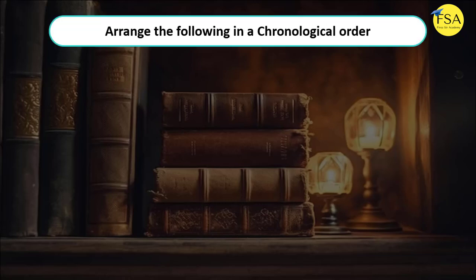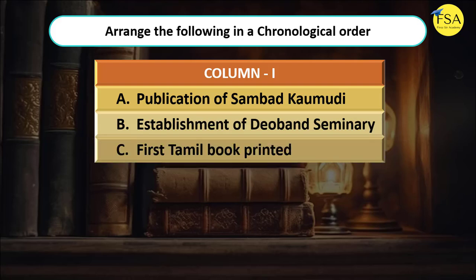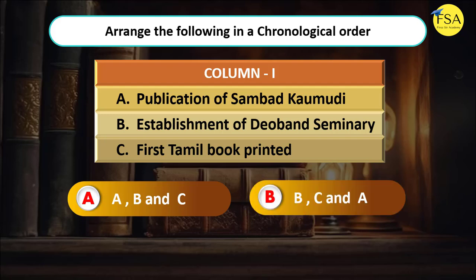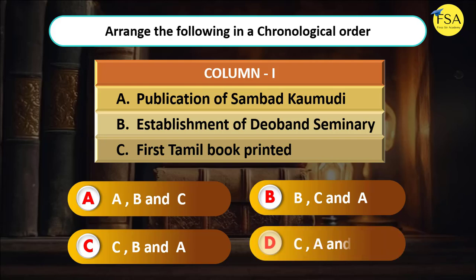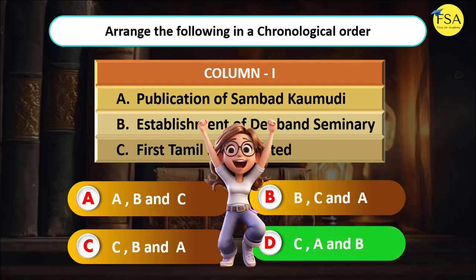Question 5: Arrange the following events in chronological order — Publication of Sambath Kaumudi, Establishment of the Urban Seminary, First Tamil book printed. The first Tamil book was printed in 1579, Sambath Kaumudi was published in 1821, and the Urban Seminary was established in 1867. So the order is C, A, B — Option D is the correct answer.